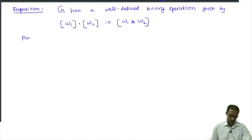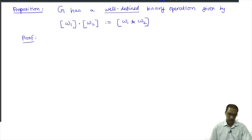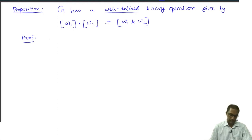The key thing that one needs to prove is well-definedness. The key point here is that this definition is well-defined, and why does one need to worry about that? Because we are picking representatives from these classes W1 and W2. It is not a priori clear that if I changed my representative, here is what we will need to show.